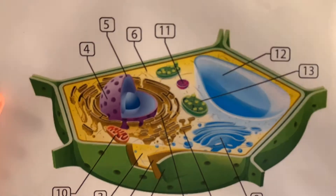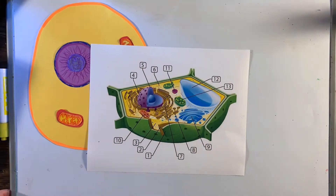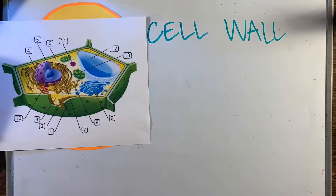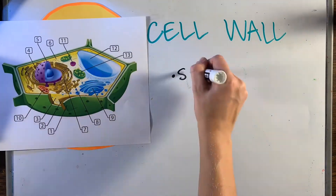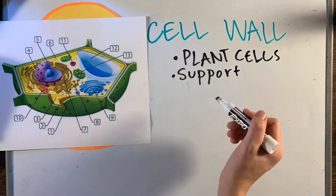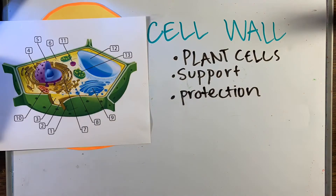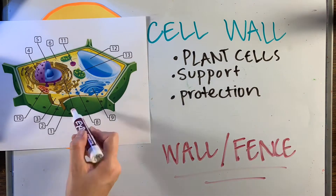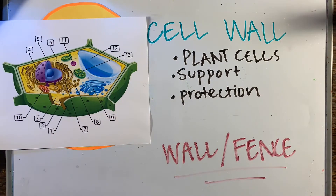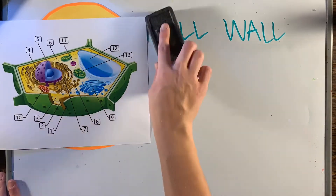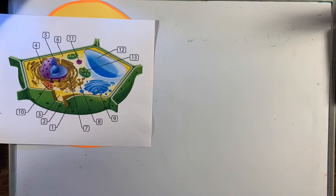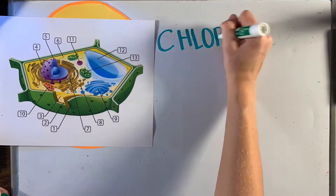In some cells like plants and fungi, they're actually surrounded by a more rigid and thicker layer called the cell wall. The cell wall offers more protection and support than a cell membrane alone, and could be compared to a wall or a fence around a factory.